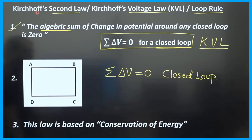Next is Kirchhoff's second law, also called Kirchhoff's voltage law or loop rule. Definition: the algebraic sum of change in potential around any closed loop is zero — that is, summation of delta V equals zero for a closed loop. This law is valid only for a closed loop, not for an open loop.